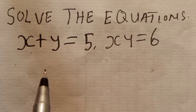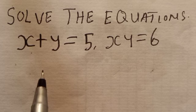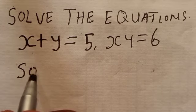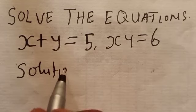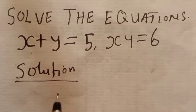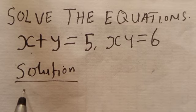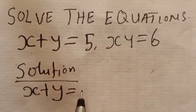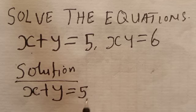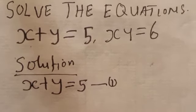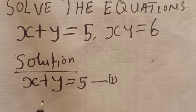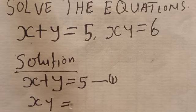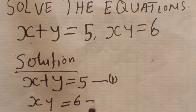This is a simultaneous equation, but in this type of equation, while solving it, it will lead to a quadratic equation solution. Let's start with equation 1: x plus y is equal to 5. Let's call this equation 1. Then the second equation is x times y is equal to 6. This is equation 2.